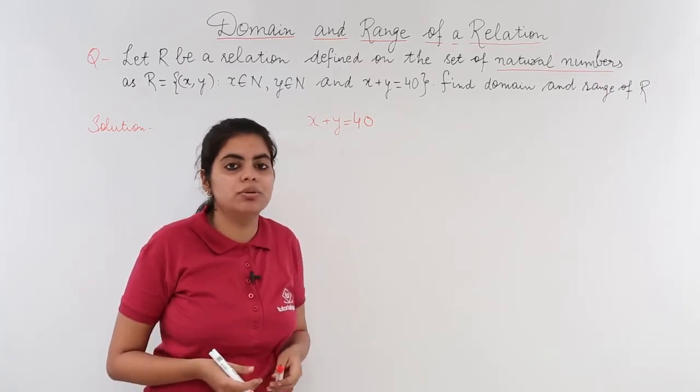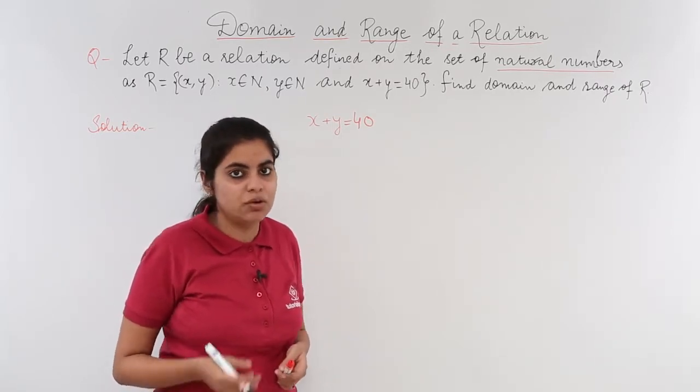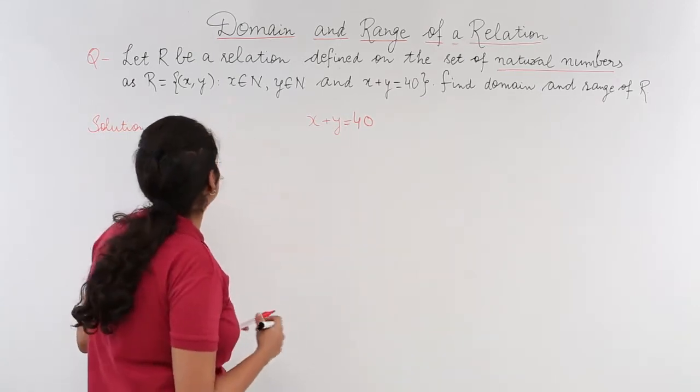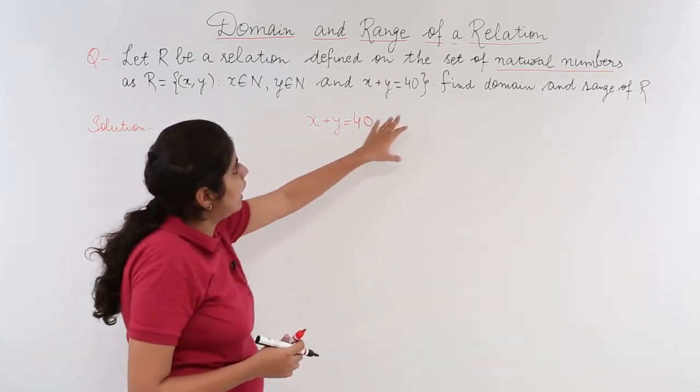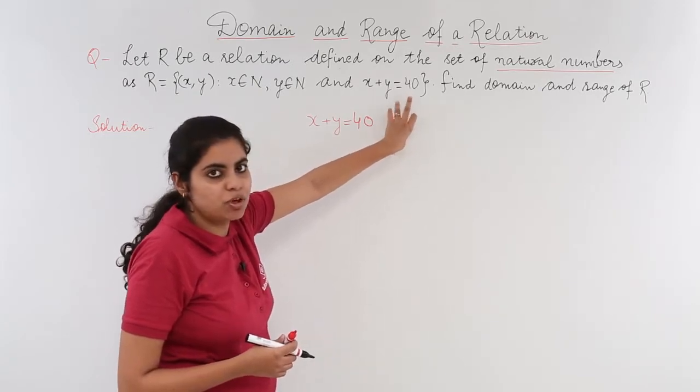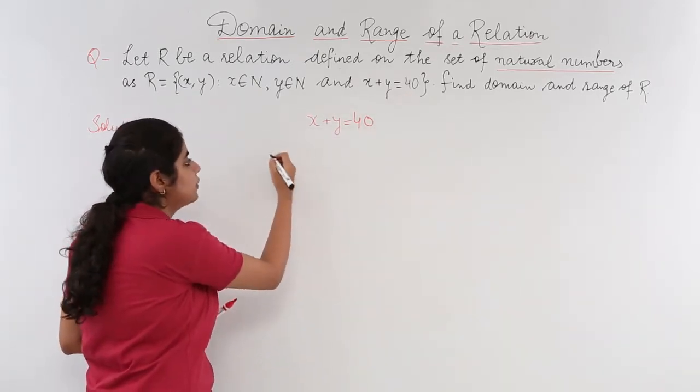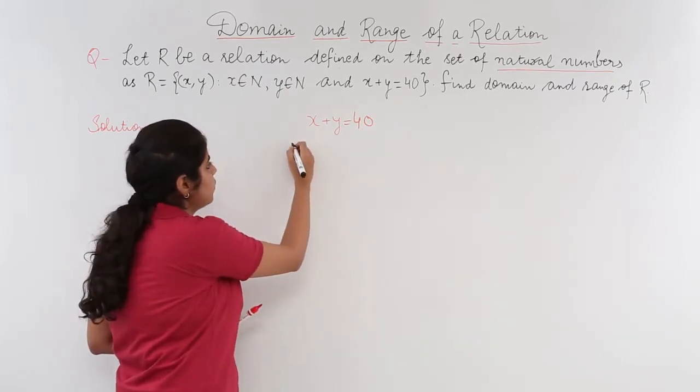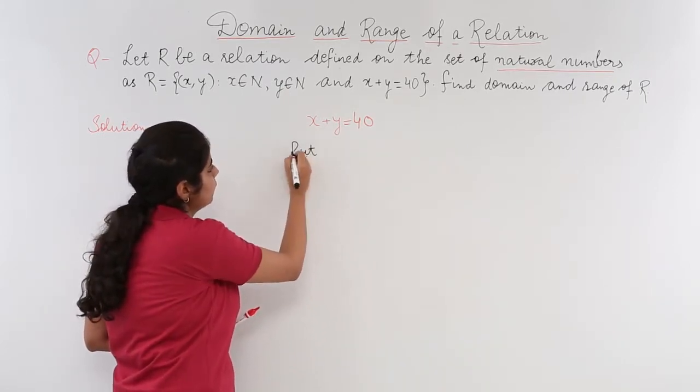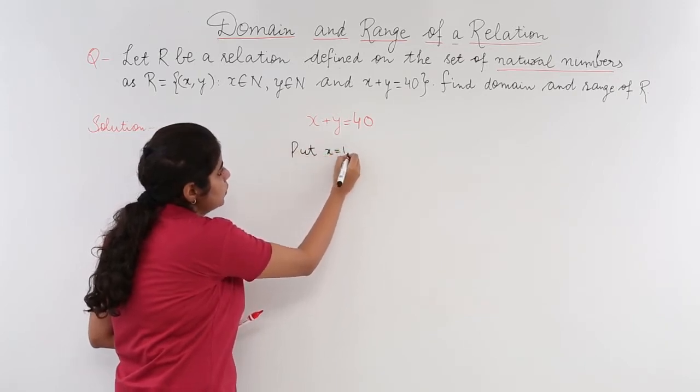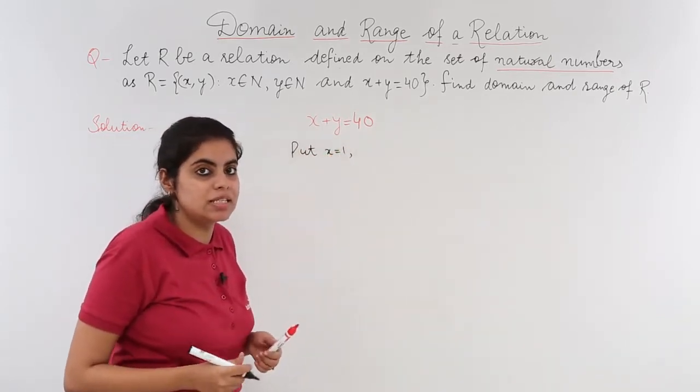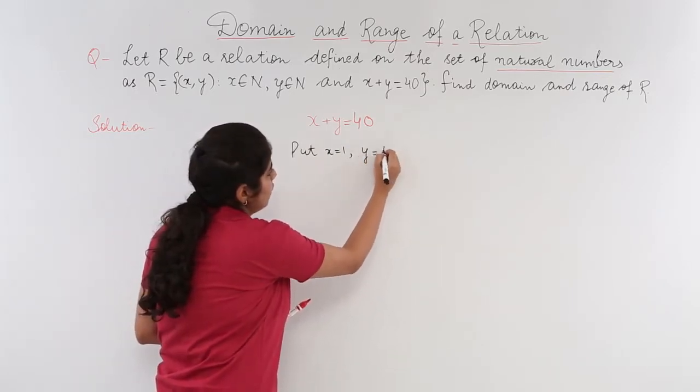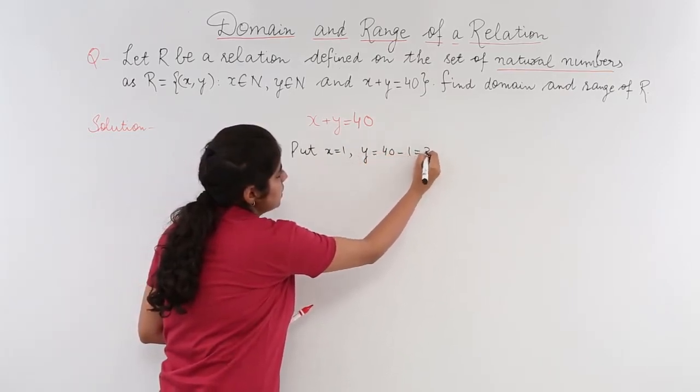I know that natural numbers start from 1 and so on. The counting starts from 1, right? The sum has to be 40. I take up different values of x and get different values of y. Supposedly, put x=1. If I put x=1, what is y? y is nothing but 40-1 which is 39.